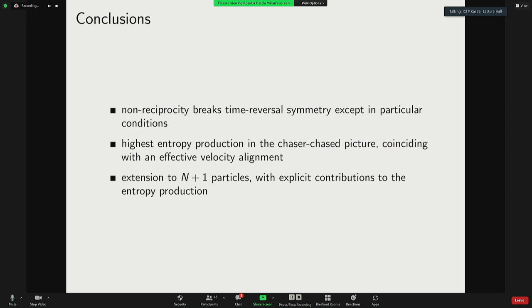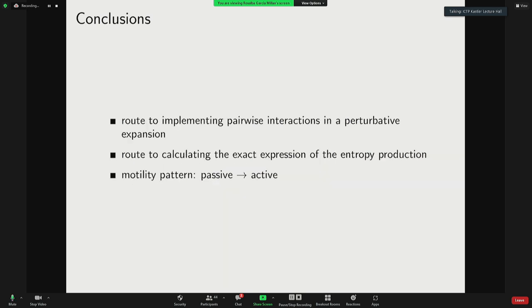The take-home message is that, in general, this system is out of equilibrium because of these non-reciprocal interactions, except in some particular conditions. And the farthest case from equilibrium is the picture where one particle is chasing the other ones. This is an example where we can calculate things, maybe perturbatively but in closed form, and we would like to extend this system to maybe other types of motion, more complicated, like run and tumble or active Brownian particles. Thank you for listening.